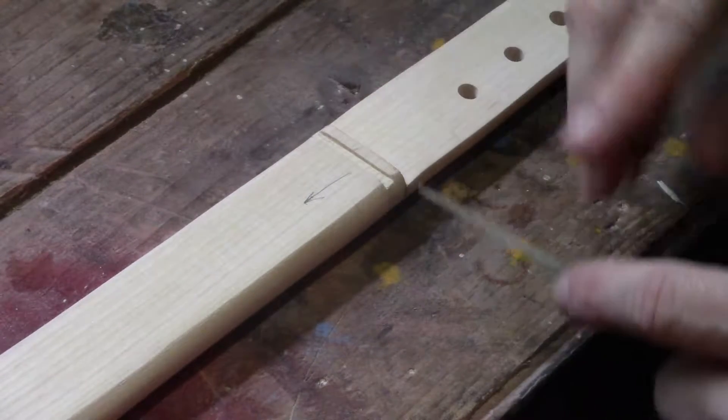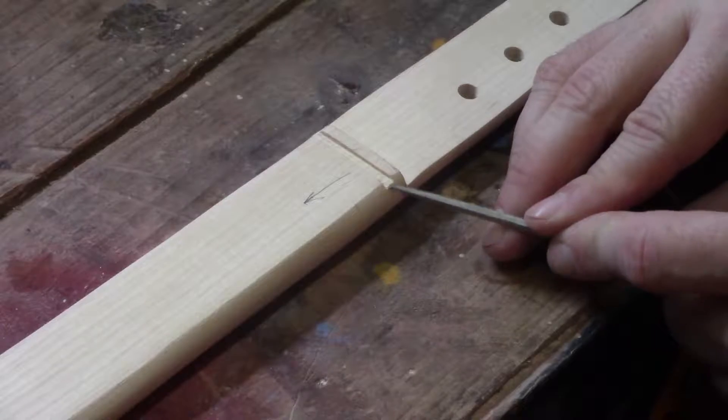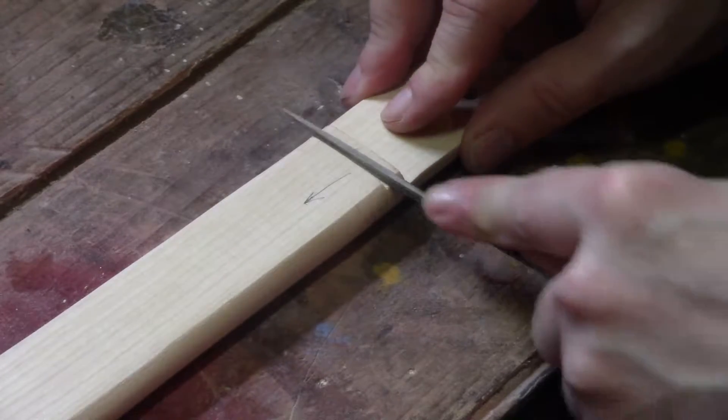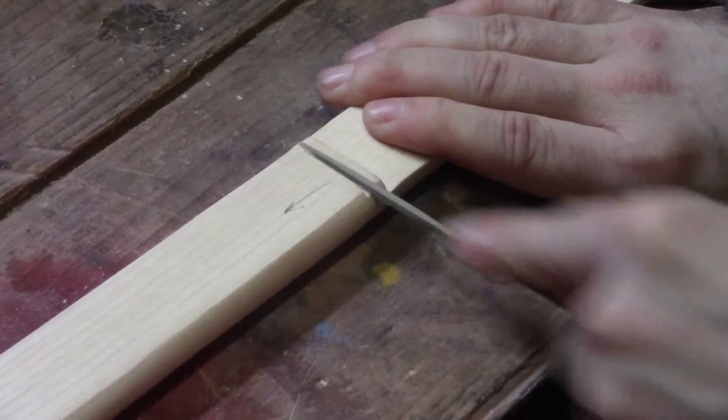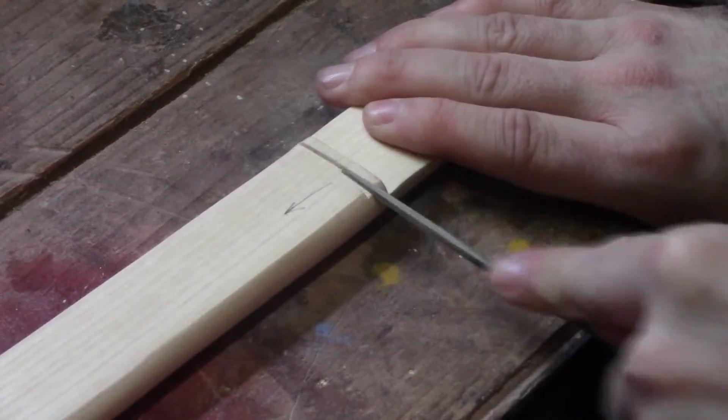And then visually you can just see that the slot is a little deeper on this side than it is on this, so we just take a little more material on this side just to ensure our nut sits in nice and square.